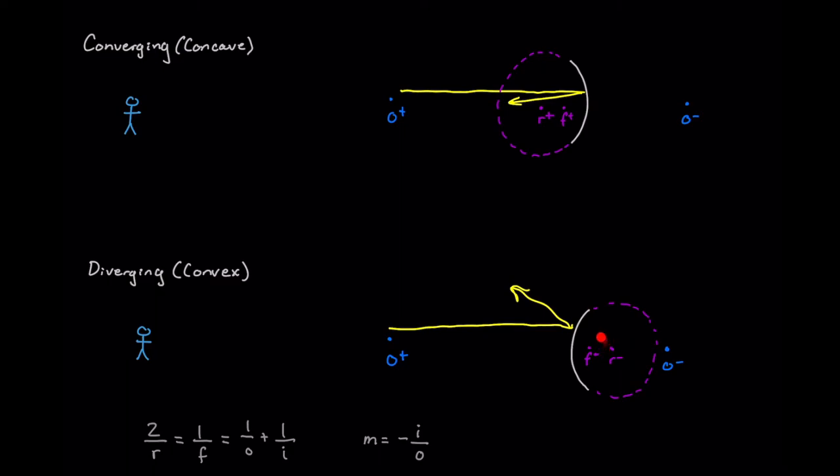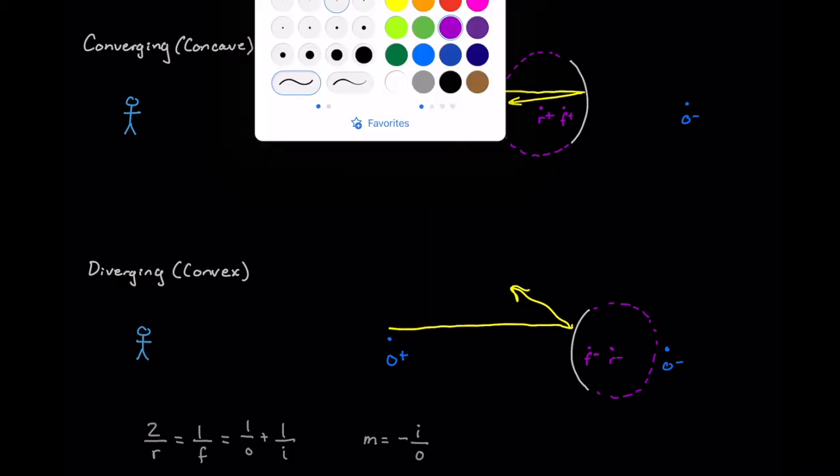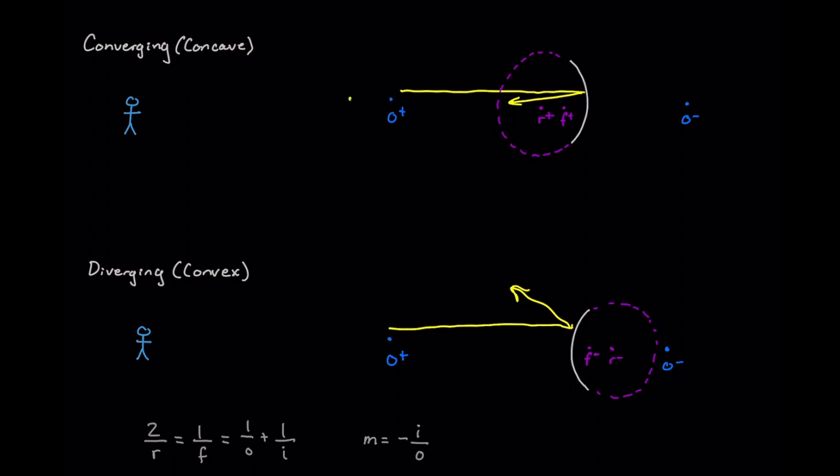And then finally, our last sign convention that we'll take a look at will be our image. Our image, if it's where we expect it to be, would be on the same side of the mirror as the object. It would be positive, forming what we call a real image.